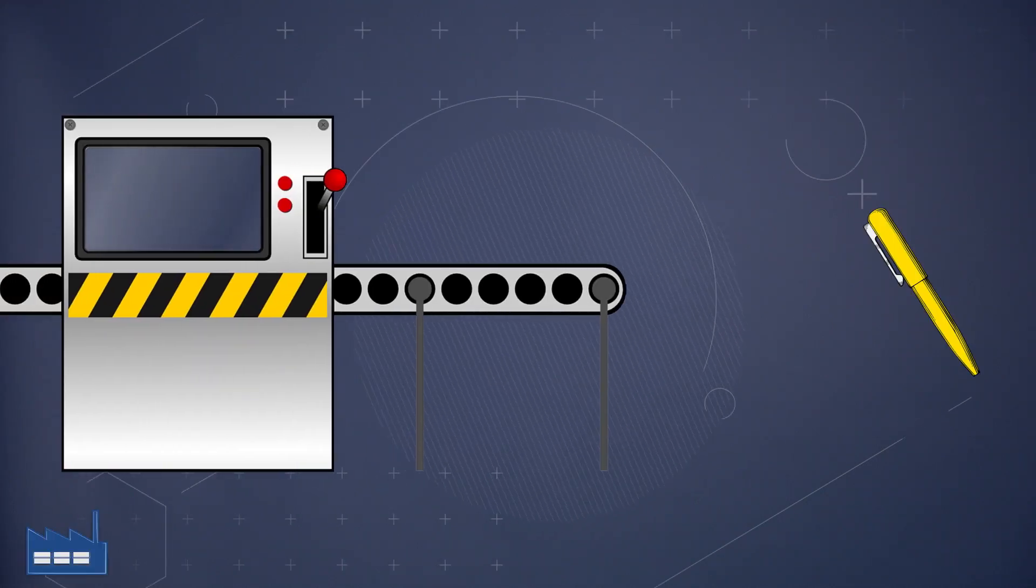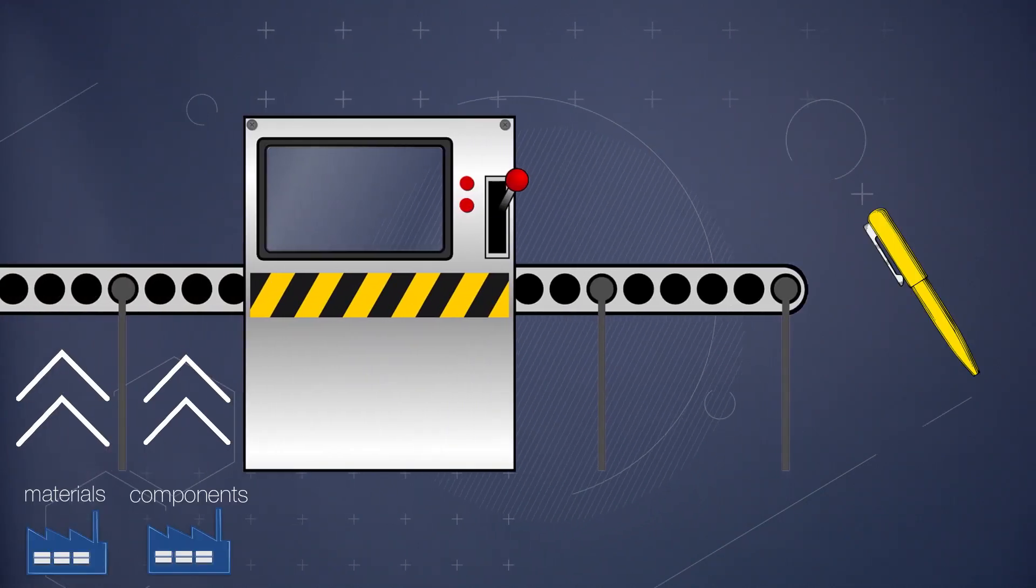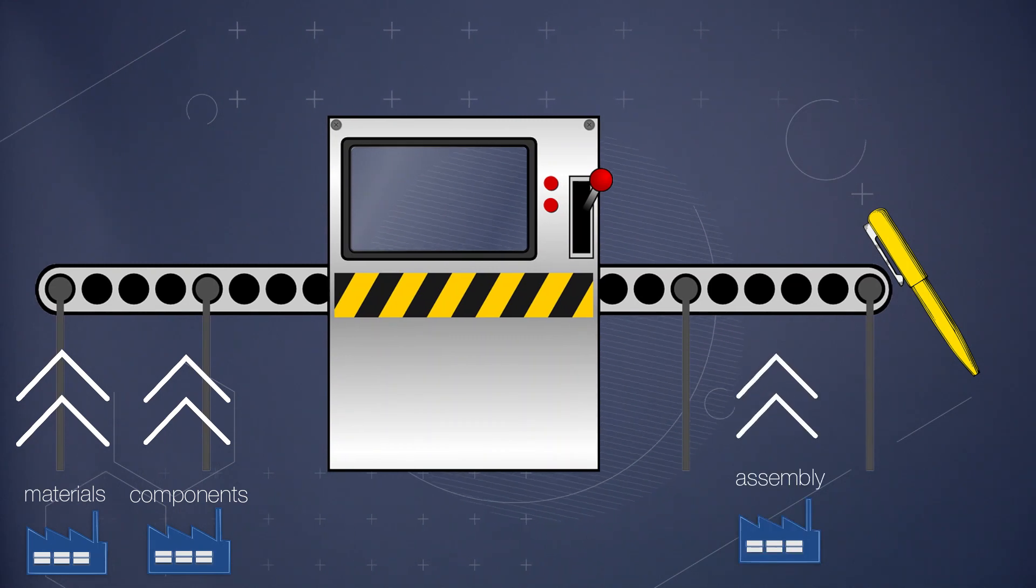Supply chains consist of all the companies involved in the production of a product. For example, for the production of this pen you need raw materials, you need to produce intermediate components and you need the assembly of the final pen.